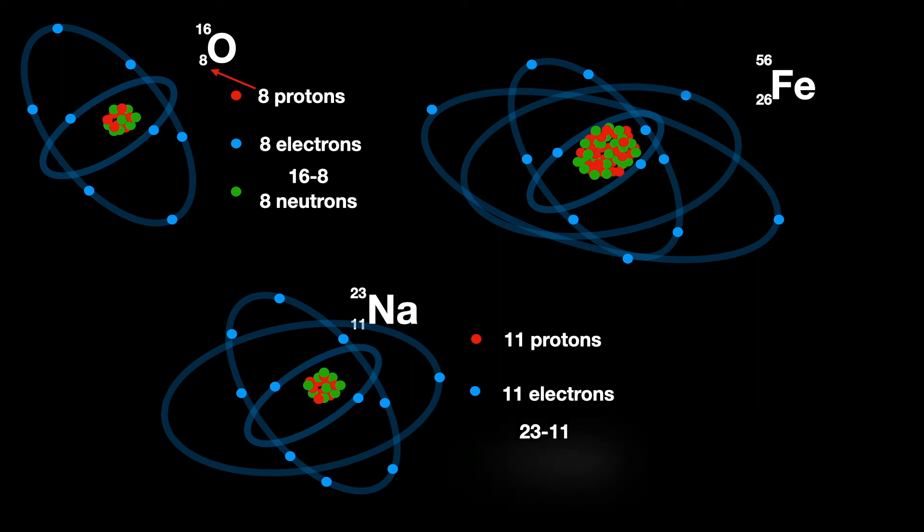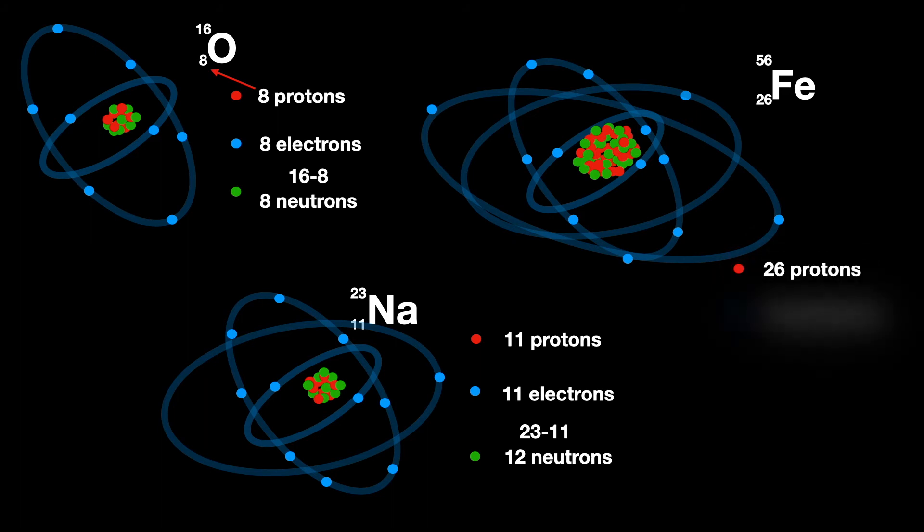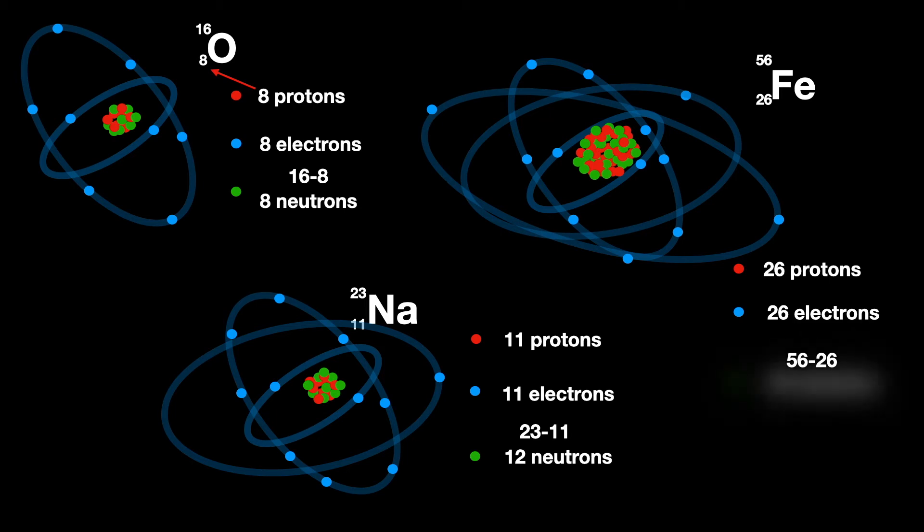Finally, Fe, iron, has 26 protons—that is the atomic number—and also therefore 26 electrons. With an atomic mass of 56, and we've already accounted for 26 protons, the number of neutrons must be 56 minus 26: 30 neutrons.